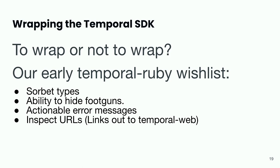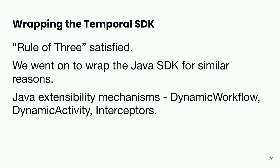We also wanted to provide actionable error messages — a big obsession of mine. We wanted to take exceptions that Temporal might throw and wrap them in Stripe-specific messages like 'go to this URL to resolve your problem' or 'run this internal script.' Another nice thing: when you create a workflow and get the response back, you get a URL telling you where to go to debug that workflow — something Temporal could never provide but Stripe could. We've done a whole ton of things with our wrappers, but the rule of three was satisfied: if you can think of three really compelling things to do with a new abstraction, go build it.